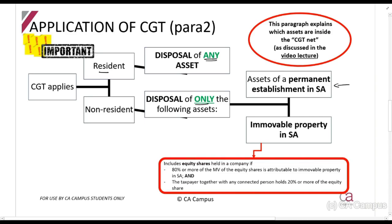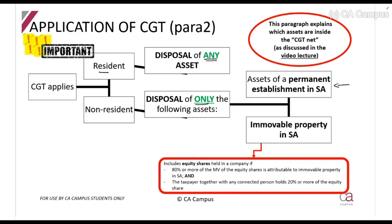For a non-resident, CGT applies to assets of a permanent establishment in South Africa. For example, you are an American but you've got a shop in South Africa - that shop is considered a permanent establishment, which is basically something with a degree of permanence. Anything disposed of through that business will be subject to CGT. Also included is any immovable property in South Africa - if you own property in Johannesburg, Cape Town, or Bloemfontein, that will be subject to CGT.